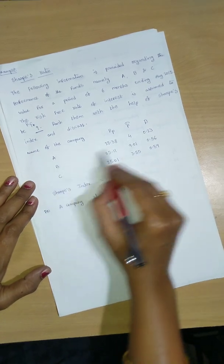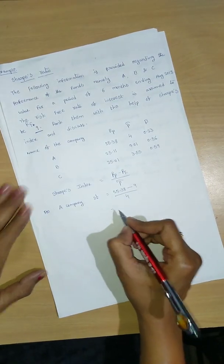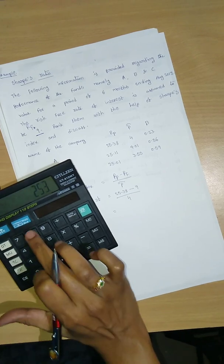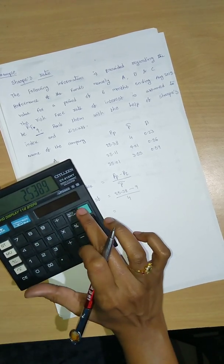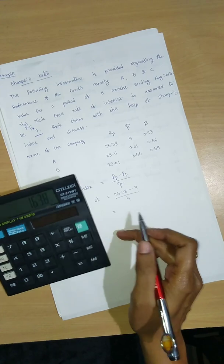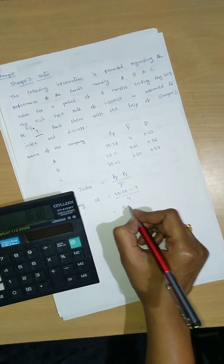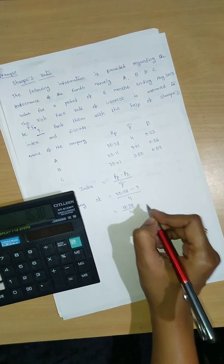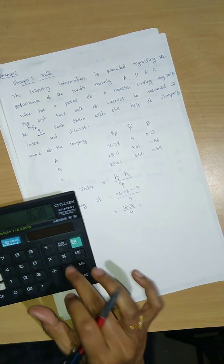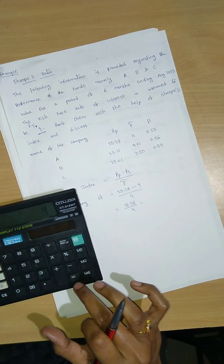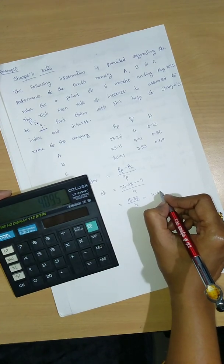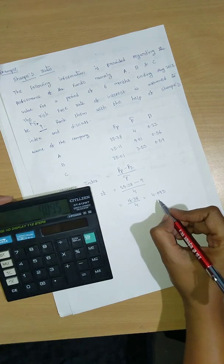So 25.38 minus 9 equals 16.38 divided by 4. So 16.38, this is the risk premium divided by 4, the total risk. Divided by 4 equals 4.095.